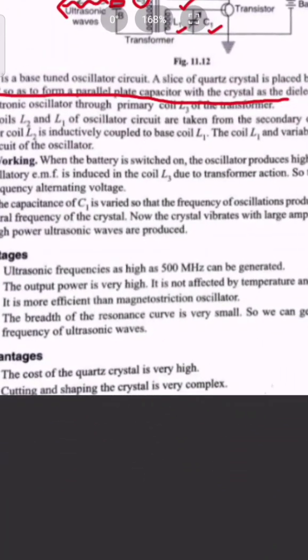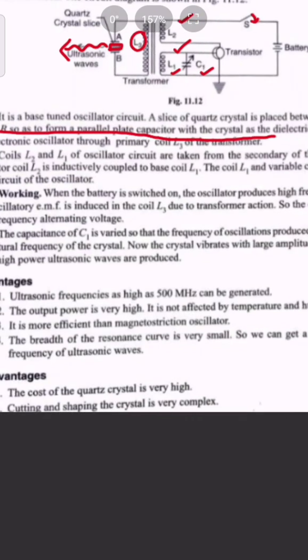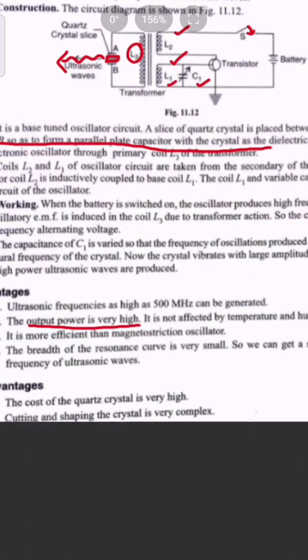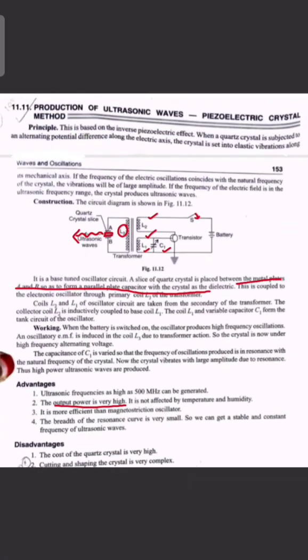The advantages are: ultrasonic frequencies as high as 100 MHz can be generated by this method; the output power is very high; it is more efficient than magnetostriction oscillators; and the breadth of the resonance curve is very small, so we can get a stable and constant frequency of ultrasonic waves.